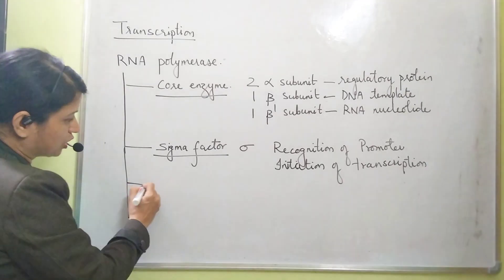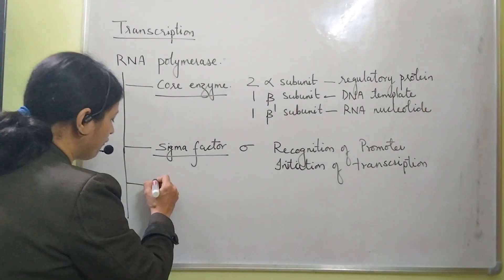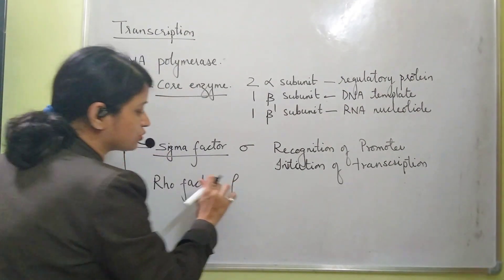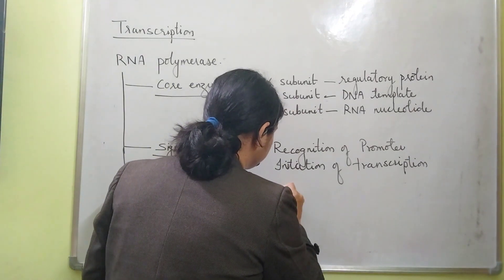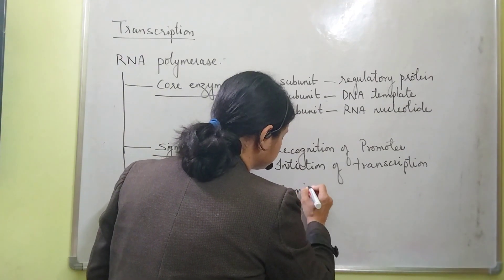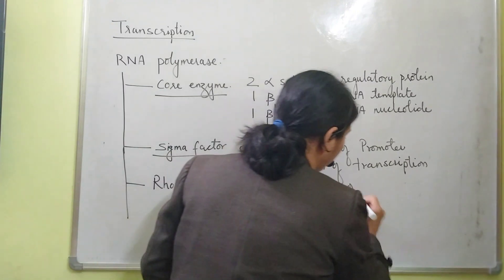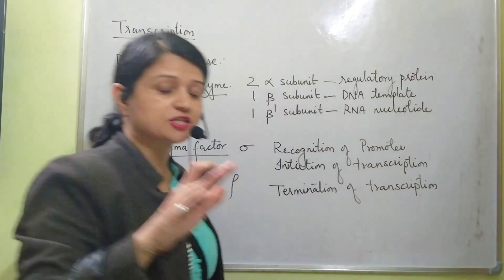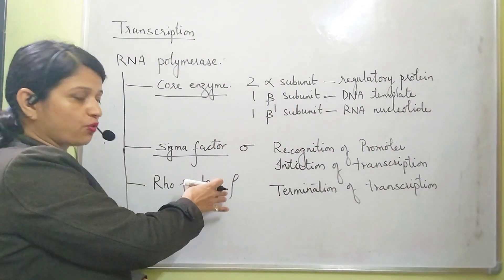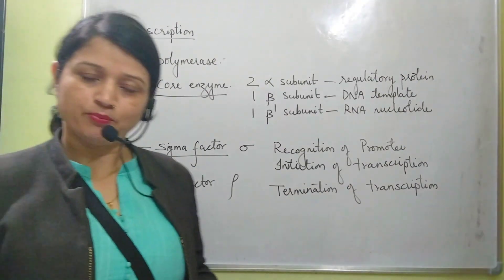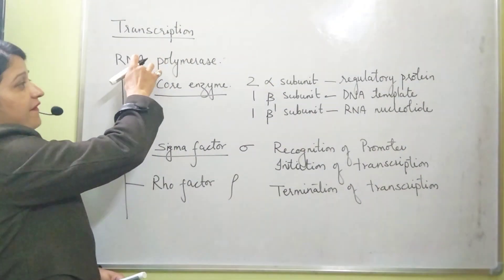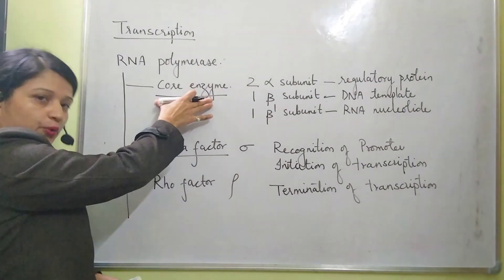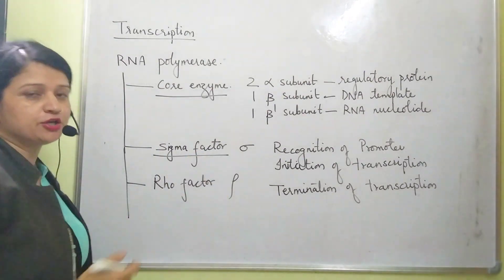The third part is the rho factor. This rho factor is required for the termination of transcription — when the process is to be stopped. The rho factor will bind to RNA polymerase at that point. So RNA polymerase is a complex enzyme having three important parts: core enzyme, sigma factor, and rho factor.